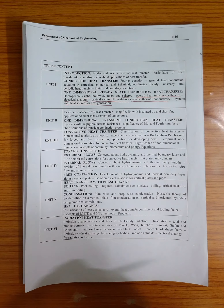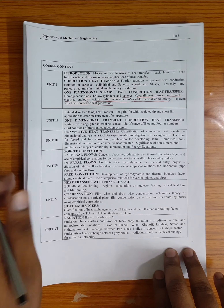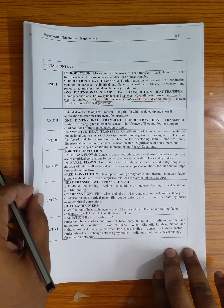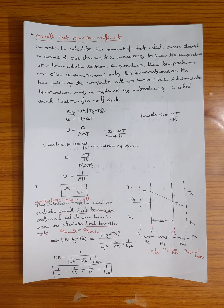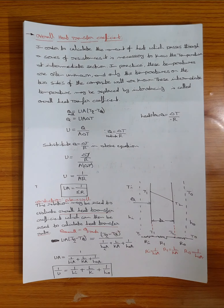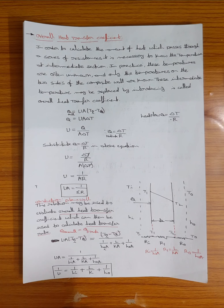Today I am discussing the Overall heat transfer coefficient, electric analog, and critical radius of insulation. The Overall heat transfer coefficient represents the intensity of heat transfer from one fluid to another through a plane wall which separates them.